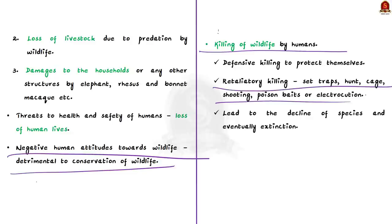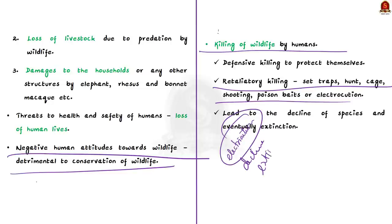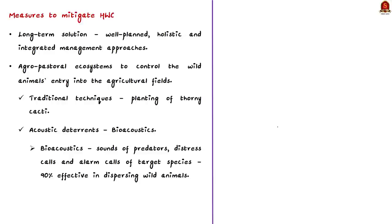Animals may be hunted, caged, shot dead, or killed using poison baits or even electrocution. We recently saw reports about elephants being killed by electrocution. These killings lead to decline of species and may eventually drive the species to extinction.